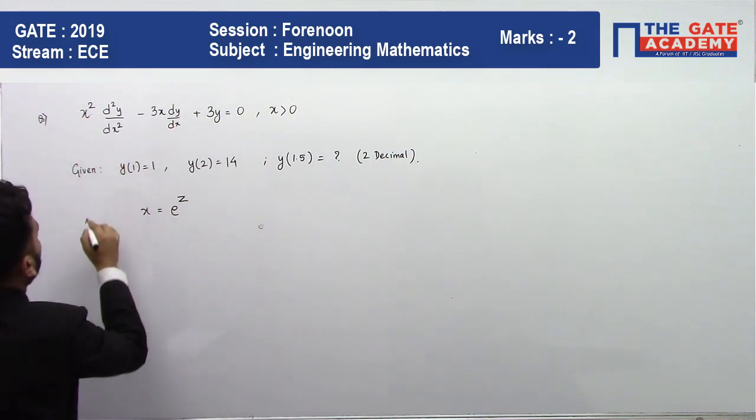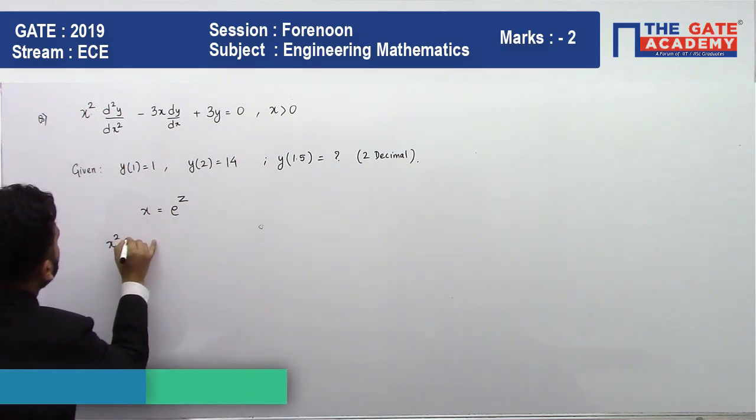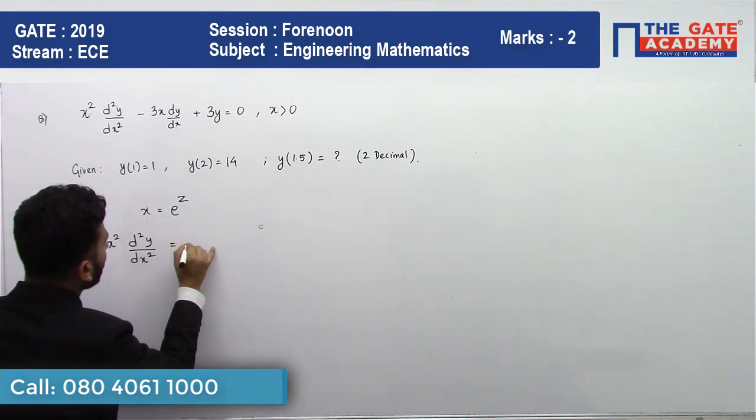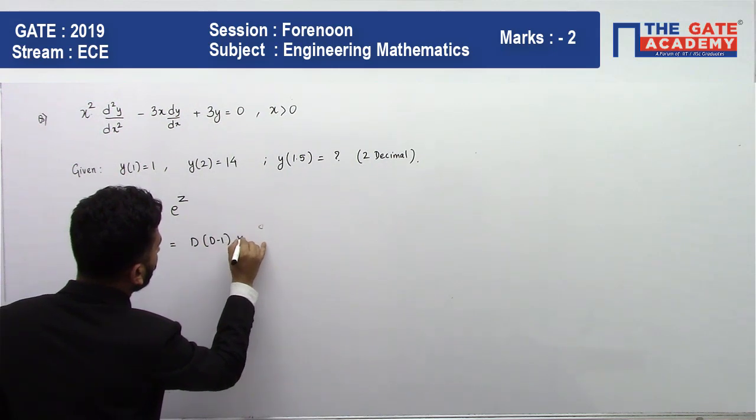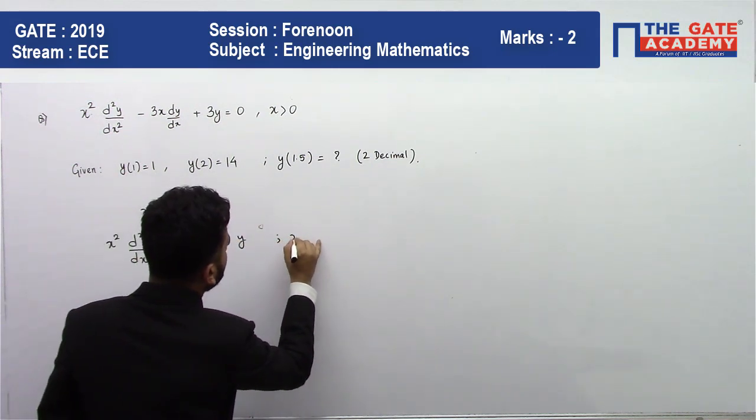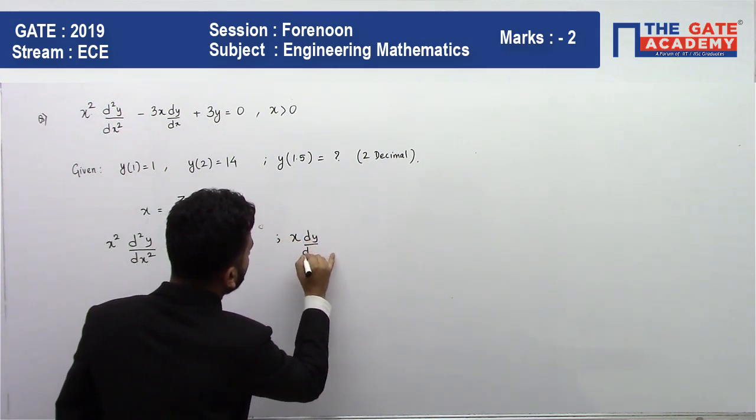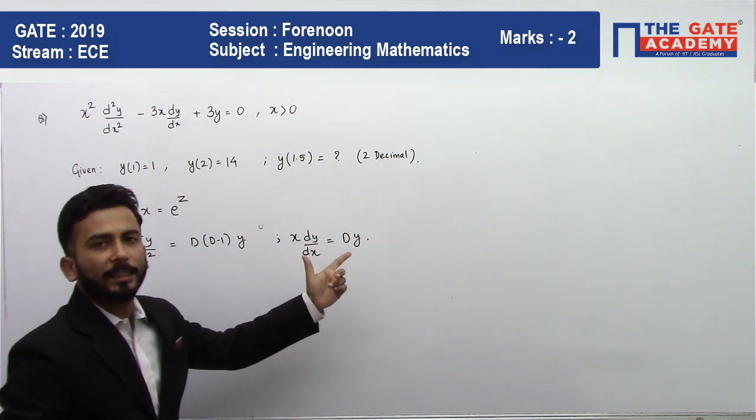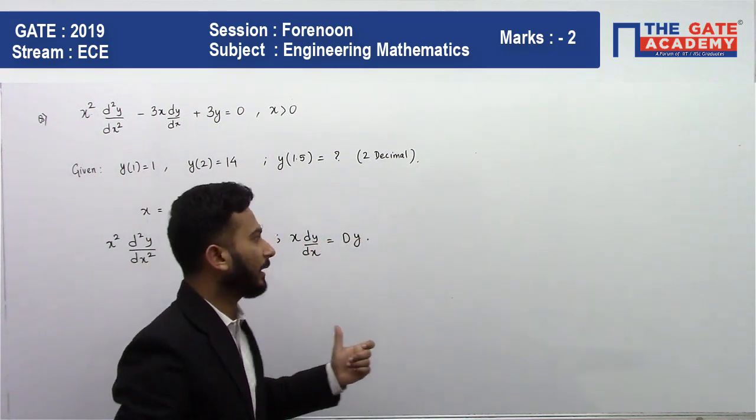After some manipulation, the substitution becomes: x²(d²y/dx²) becomes D(D-1)y, and x(dy/dx) becomes Dy, where capital D denotes d/dz.